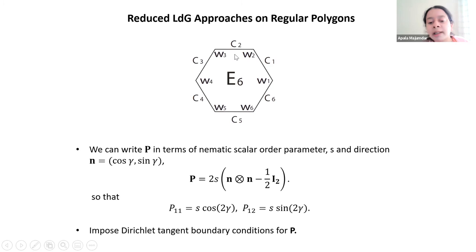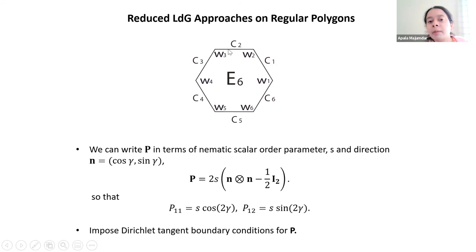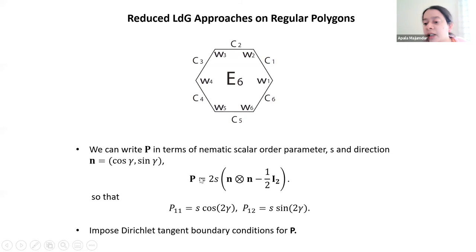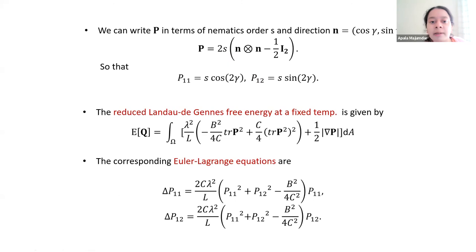We chose to work with tangent boundary conditions, meaning that n has to be tangent to the boundary — effectively parallel to the boundary — on the 2D geometry. In this 2D framework, we have a very clean interpretation of defects: a defect is essentially a point or line where this tensor P vanishes. We do not have such a simple interpretation in the 3D framework. In the 2D framework, it's just a nodal set. What makes life a lot easier is that in this reduced framework, the Landau-de Gennes energy reduces to the famous Ginzburg-Landau energy.